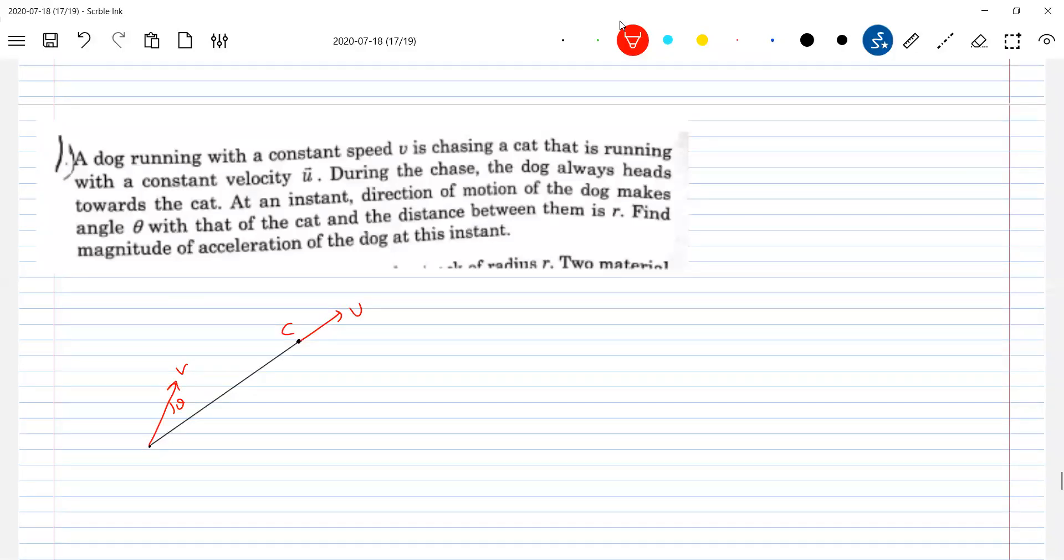The direction of motion of the dog makes an angle theta with that of the cat. So here in the diagram you can see a little bit of correction I'll make. So here actually the cat will have velocity u and this is the velocity of the dog.